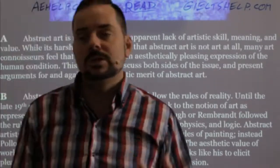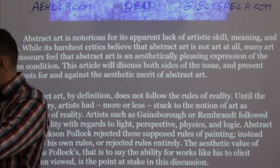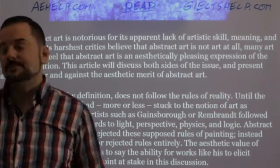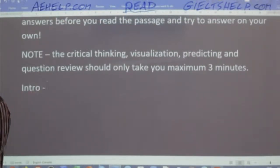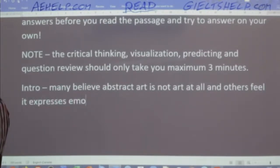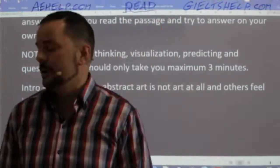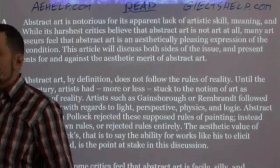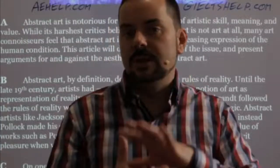What is this paragraph about? What is this five-line introduction telling you, the reader? Hopefully many of you got the idea that the intro says: many believe abstract art is not art at all, and others feel it expresses emotions. There are two kinds of different arguments about abstract art — you need to get that much. Otherwise the reading is just going to be a blur. This is a very important step — you have to quickly think about what this paragraph is about.